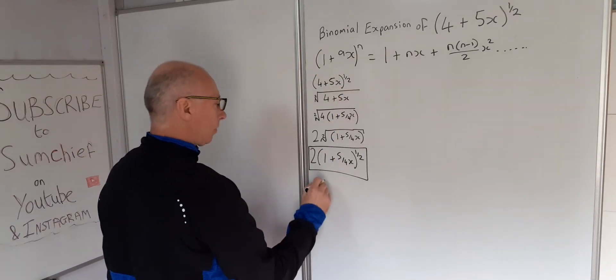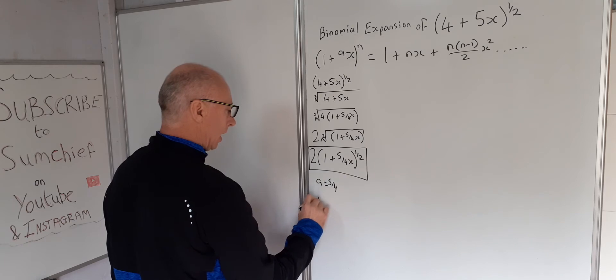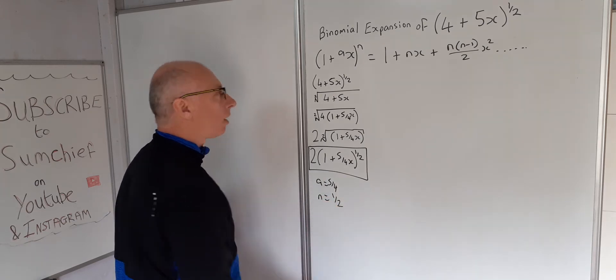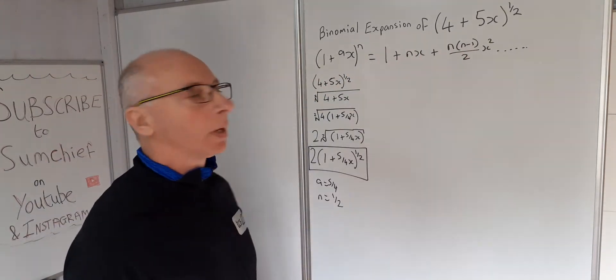And then we can use this 1 plus 5 over 4x in this manner. So we could say a is 5 over 4, and n equals a half when we're going through all this formula here.